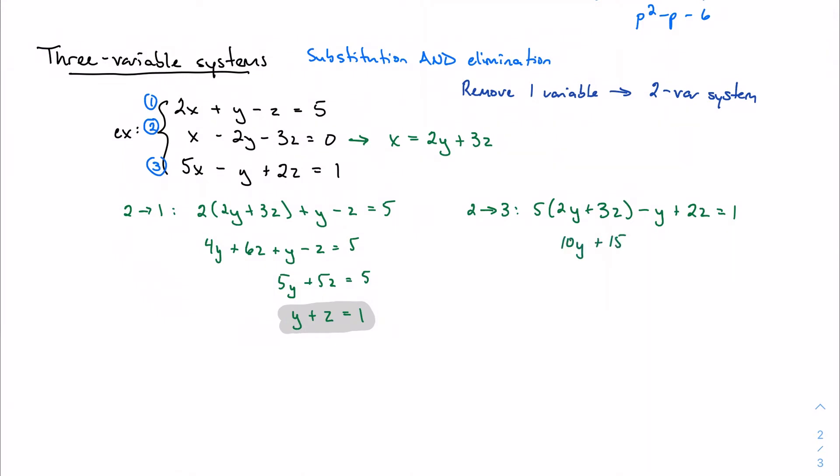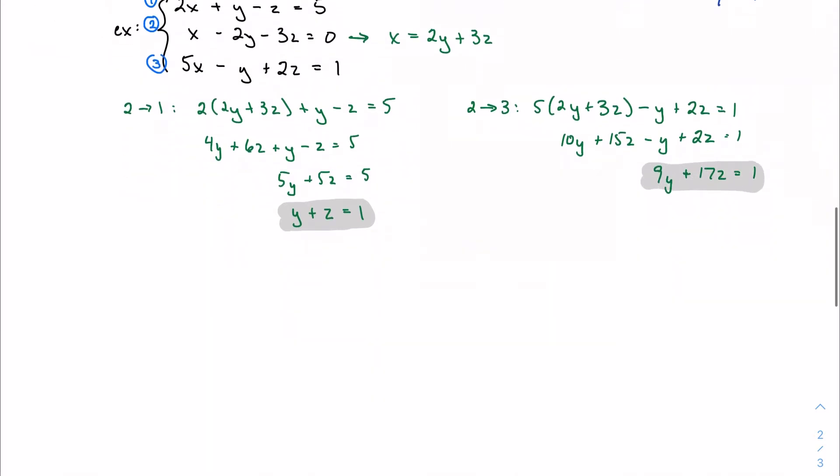Over here, 9y plus 17z equals one. And now, as you can see, I've got a two variable system. So I've got y plus z equal to one, and 9y plus 17z equal to one.